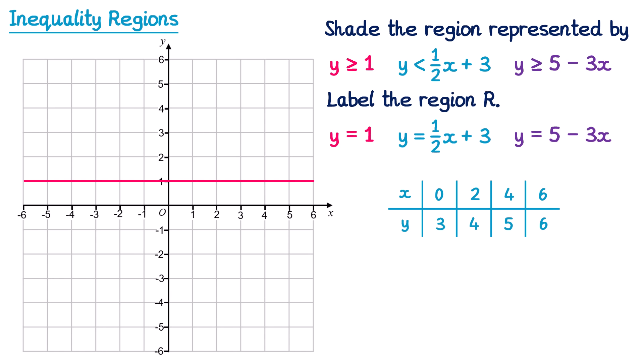I plot the points (0, 3), (2, 4), (4, 5), and (6, 6). Since the inequality for this line was strictly less than, I draw a dotted line through these points.